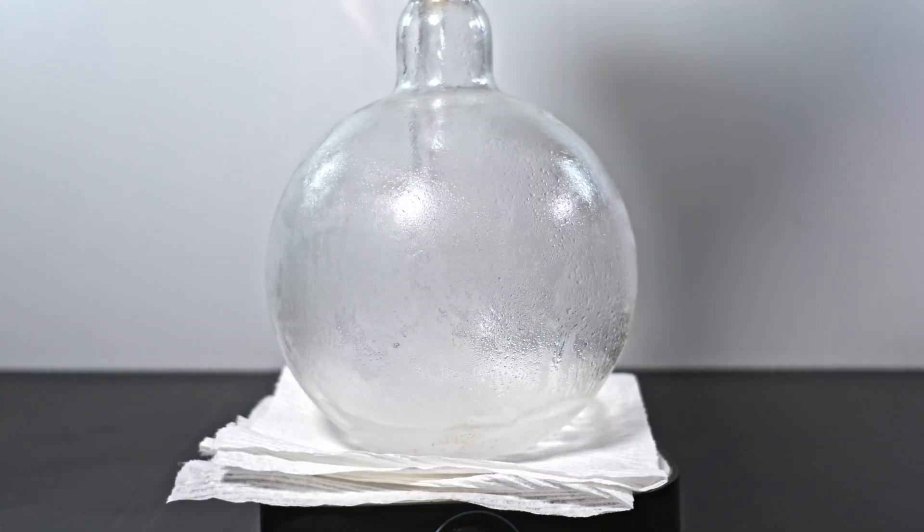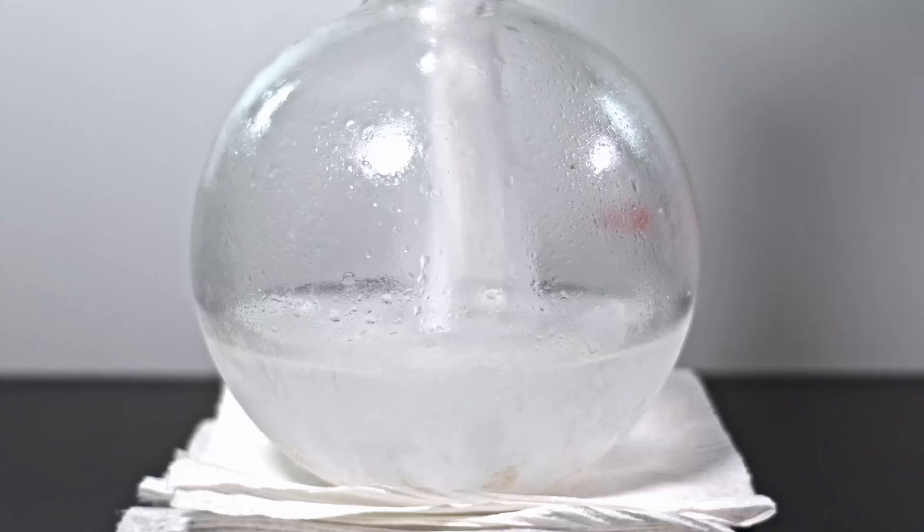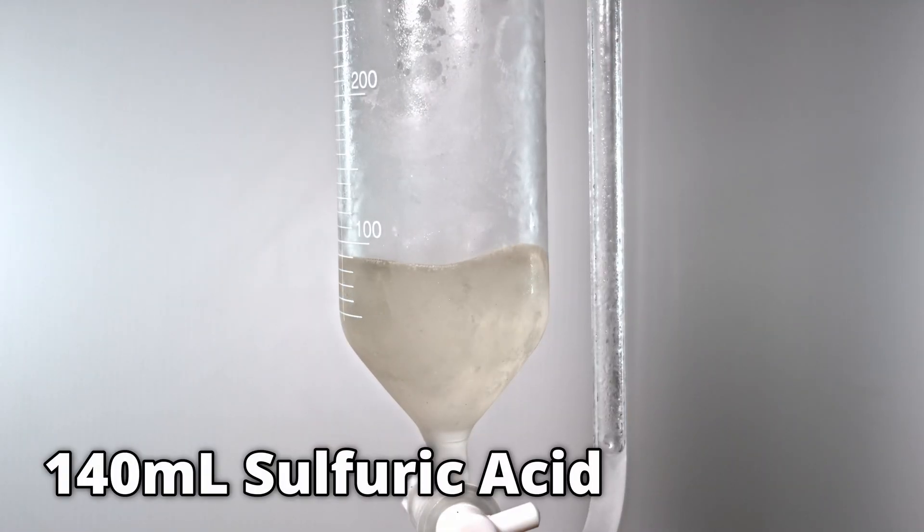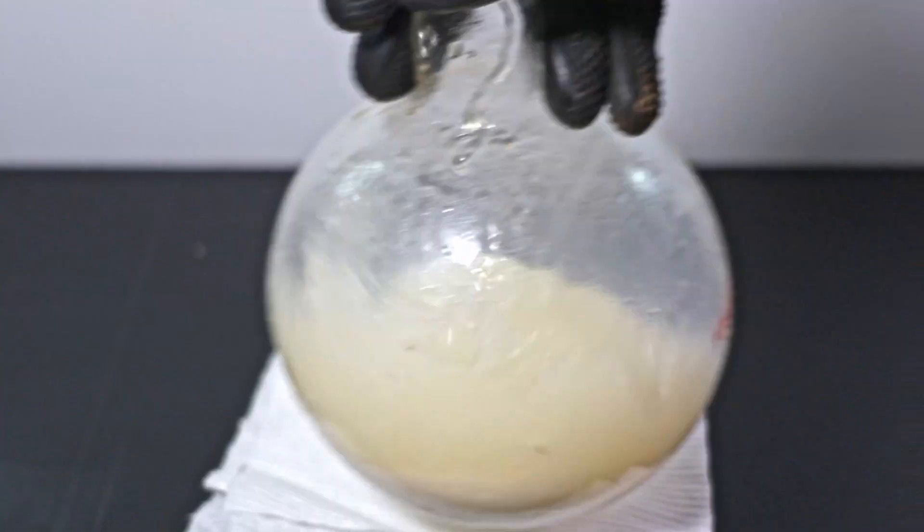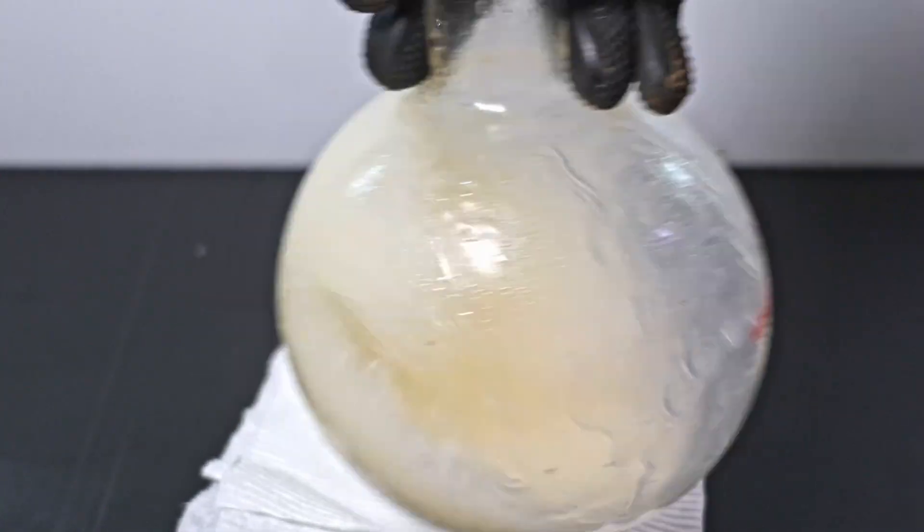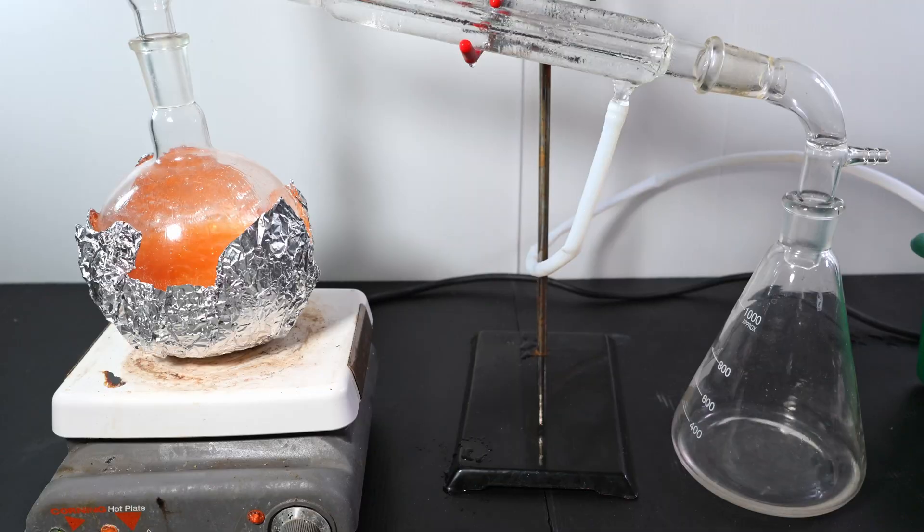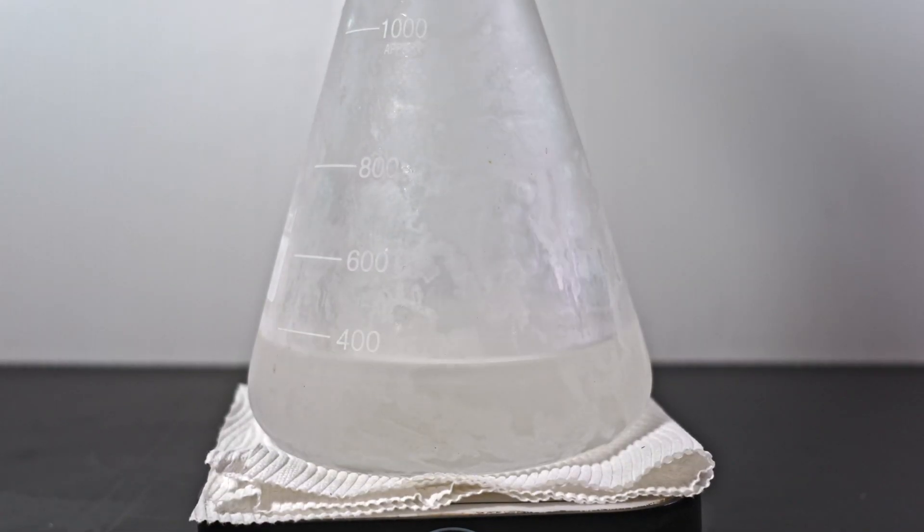For my second half, I again add 300 milliliters of ethanol followed by 250 grams of sodium bromide. I reload my funnel with 140 milliliters of sulfuric acid and manually stir for the duration of the addition. It eventually becomes a nice orange color. I distill off everything again and chill down the distillate to negative 10C.